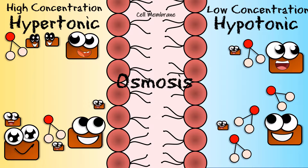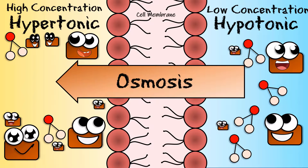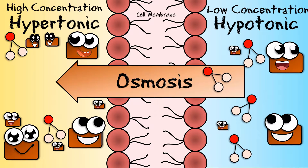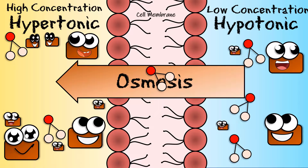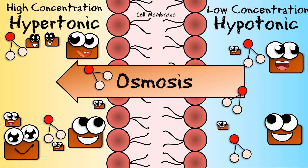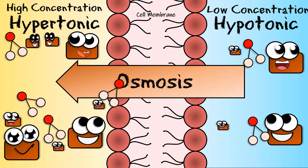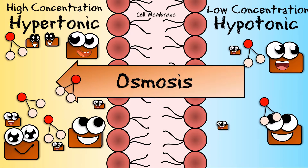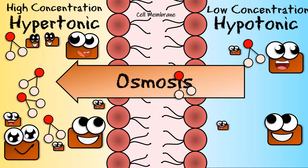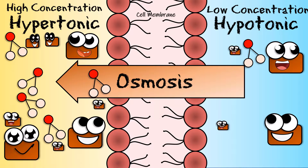The water molecules move from a hypotonic solution to a hypertonic solution, as the hypotonic condition has more number of water molecules as compared to the hypertonic solution. This balances the concentration gradient across the membrane.